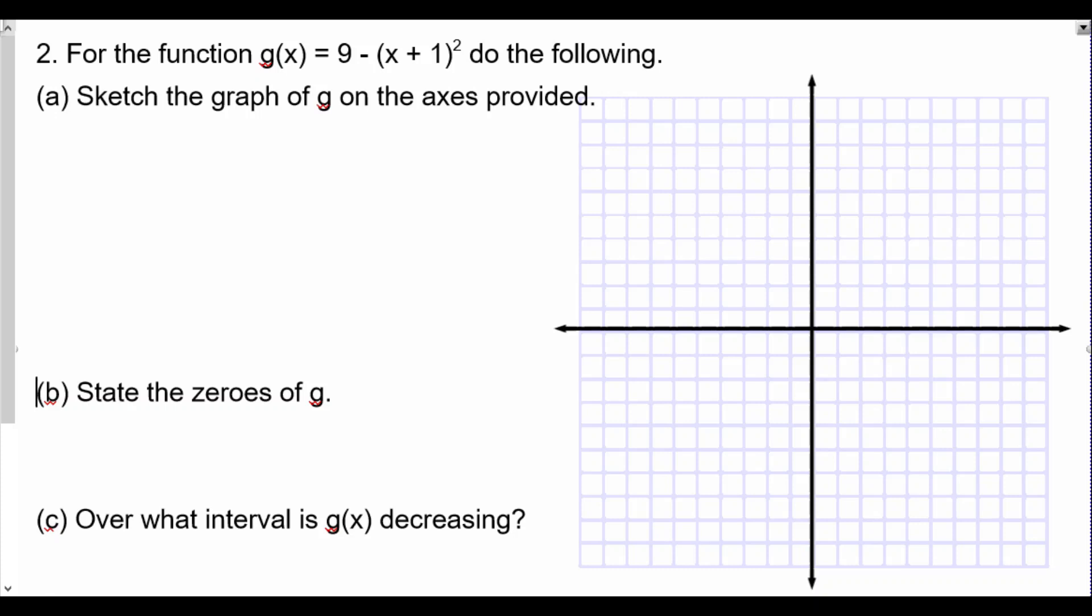For number 2, we were asked for the function g(x) = 9 - (x + 1)² to sketch a graph of g on the axes provided. One of the things we should keep in mind is the vertex form of a parabola.